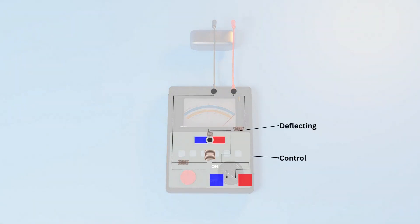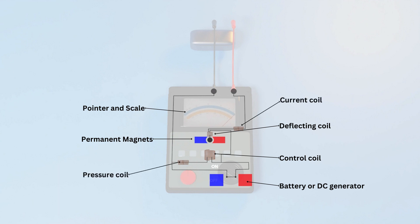The important construction features of Megger consists of control and deflecting coil, permanent magnet, pointer and scale, DC generator or battery connection, and pressure coil and current coil.